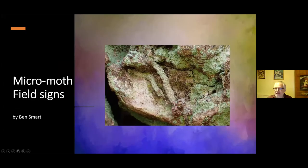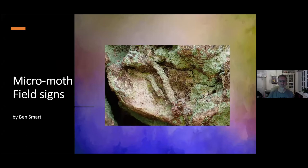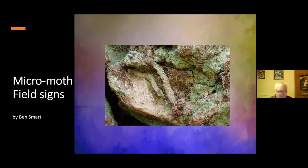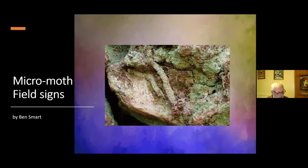This talk is an introduction to a wide variety of field signs - looking at the field signs that allow us to detect the presence of micro-lepidoptera and identify the species responsible. I'll try to cover a wide variety of species types of signs and the many different feeding methods used, illustrating this with things you might find around now. Most of these will be found in my area but almost all will occur in your area too. If anyone's inspired, you'll be able to go out into the field tomorrow and record some of these field signs without too much trouble.